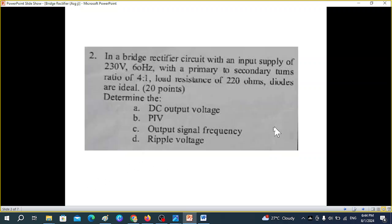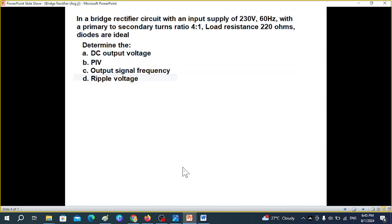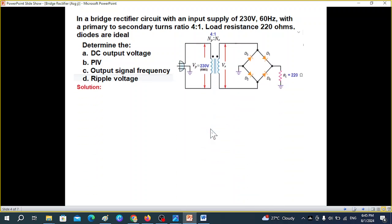The question sent by the student is shown here. In a bridge rectifier circuit with an input supply of 230 volts, 60 Hertz with the primary to secondary turn ratio of four to one, load resistance 220 Ohms, diodes are ideal. And we have to determine these four points: the DC output voltage, peak inverse voltage PIV, the output signal frequency and the ripple voltage. No diagram is given, so we have to draw a diagram. I've just written down the question again here neatly. And now we can assume this diagram. This is our bridge rectifier diagram.